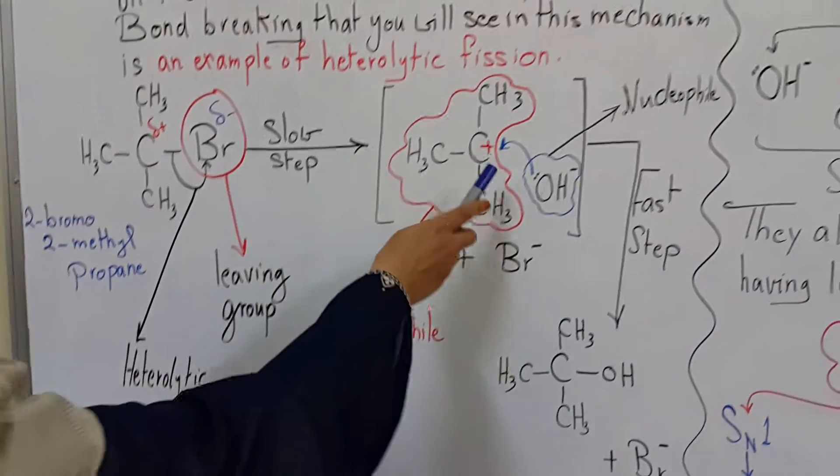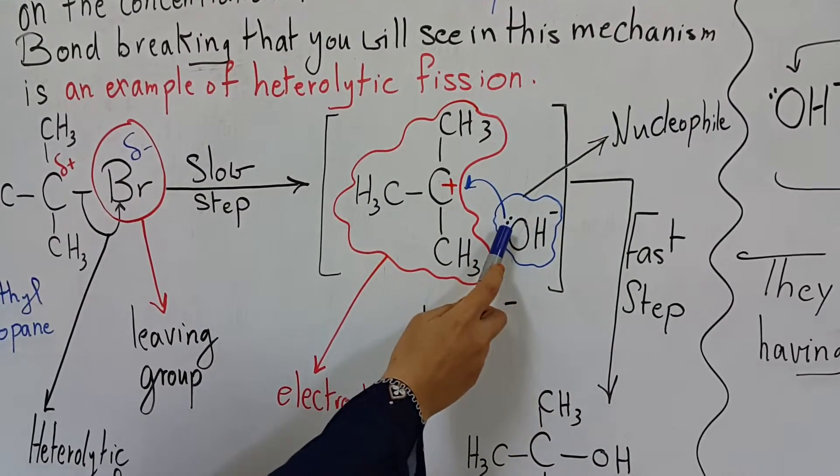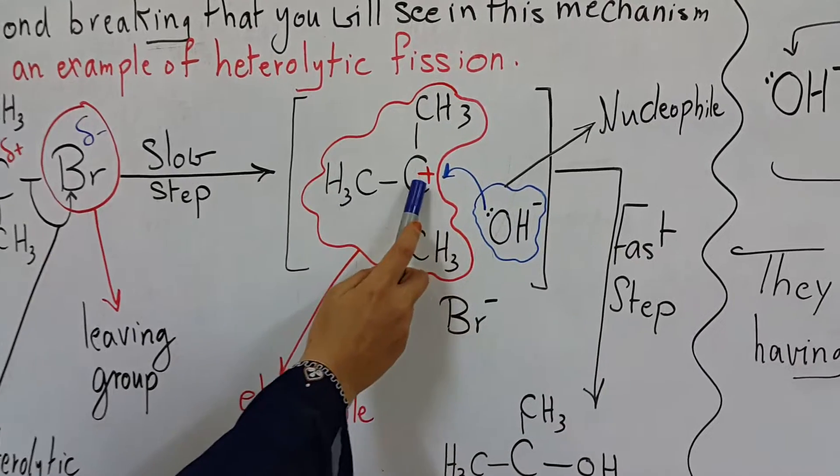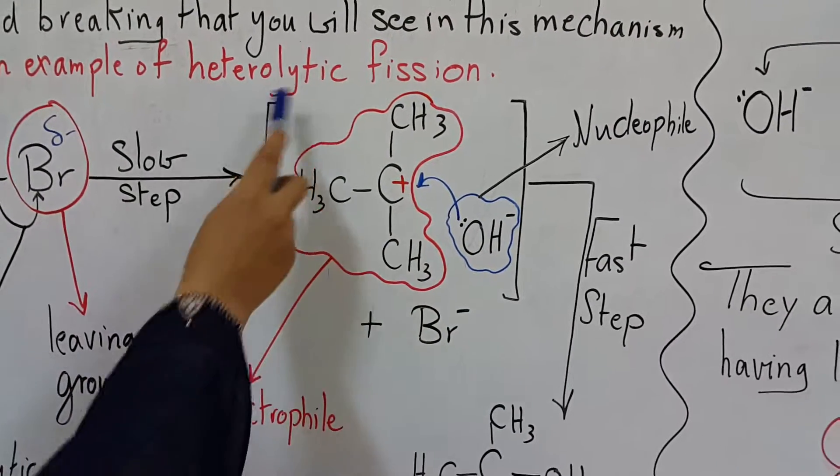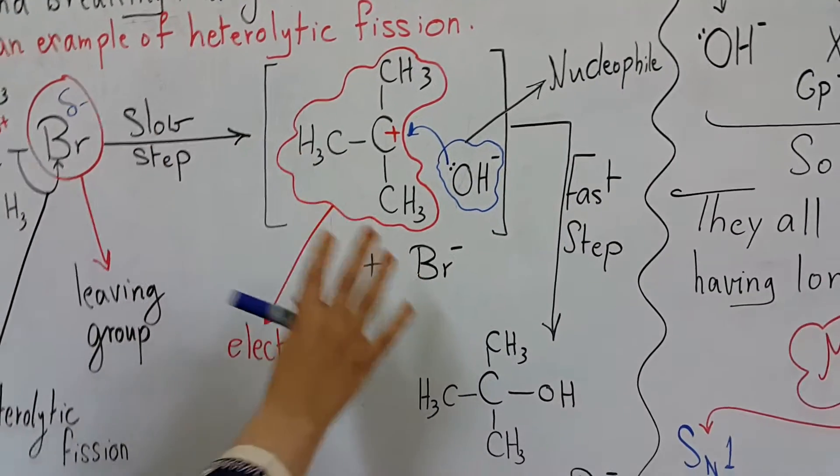The carbocation will be attacked by the hydroxyl group. The OH group has a lone pair of electrons which will attack the positive charge on the carbon. This carbocation intermediate is very stable, which is why it forms and remains in the medium.